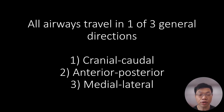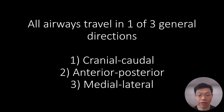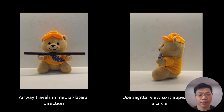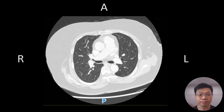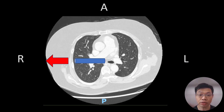Recall from the first video in the series that all airways travel in one of three general directions: the cranial-caudal, anterior-posterior, or medial-lateral directions. If the airway travels in the medial-lateral direction as shown by the straw, using the sagittal view will help you to see it as a circle. In this case, because the right upper lobe appears as the tube traveling in the medial to lateral direction, we can use the sagittal CT to visualize the tubes as holes.